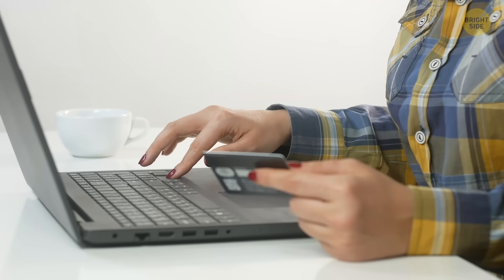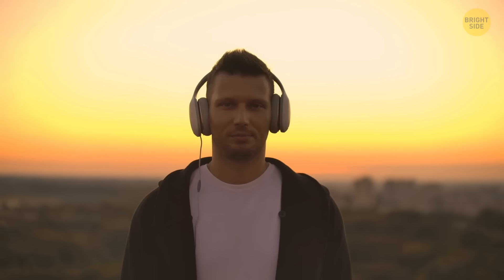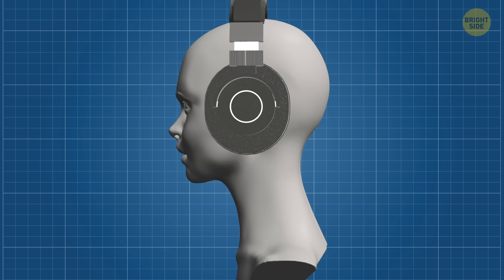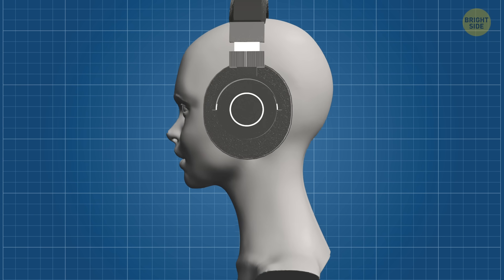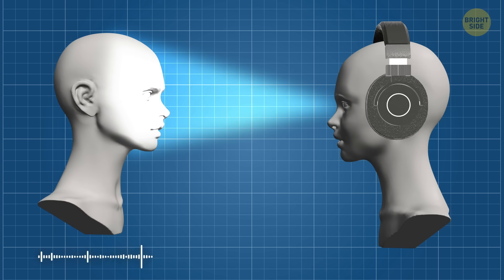The headphones aren't for sale yet, but the code is out there, and others can experiment with it. Let's dive deeper into how it all works. You wear regular headphones that have built-in microphones. When you want to hear someone, you just press a button and look at them while they're speaking.